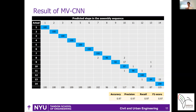Here are the training model results. The Y-axis represents the actual step and the X-axis represents the predicted steps, so a blue cell indicates a correct answer from the machine learning model. The model shows performance of 0.97 in accuracy, precision, recall, and F1 score.